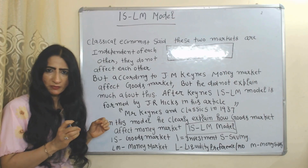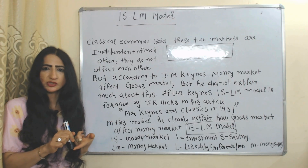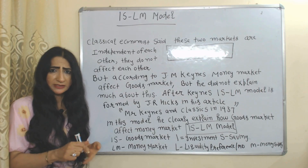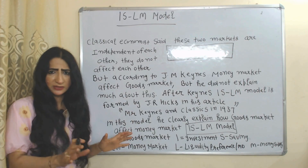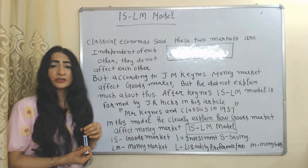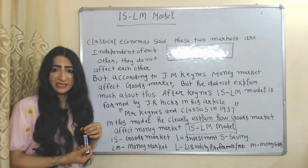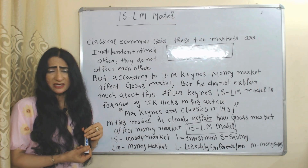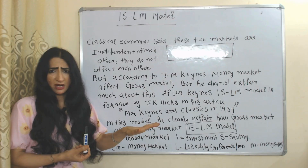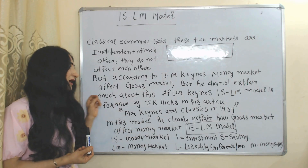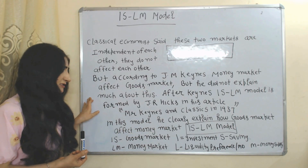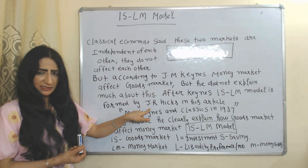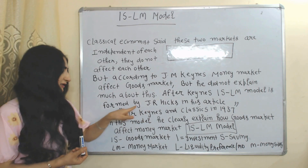There are mainly two types of market: money market and goods market. According to classical economists, there is no relationship between these two markets. But according to J.M. Keynes, there is some relationship between these two markets. Keynes didn't explain much about this, so after Keynes, the IS-LM model was formed by J.R. Hicks.